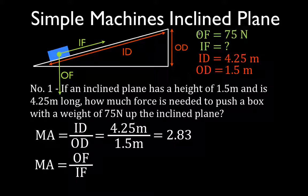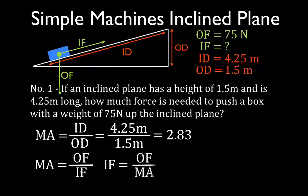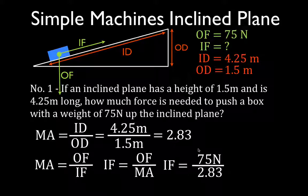An object has a weight of 75 newtons and the mechanical advantage is almost 3. How much force do we have to apply if the machine is going to multiply the input force by 3? We want to find the input force, so we rearrange the equation: input force equals output force divided by mechanical advantage. Substituting our numbers: 75 newtons divided by 2.83 gives us 26.5 newtons.